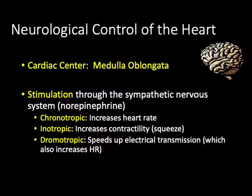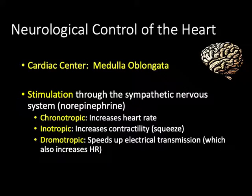The medulla oblongata houses the cardiac control center, which takes feedback from various receptors and sensors and stimulates the heart to increase output. It does this through chronotropic effects, which relate to heart rate; inotropic effects, which relate to contractile squeeze; and dromotropic effects, which refer to the speed of electrical transmission from one cell to the next. Speeding up transmission speeds up heart rate, so these effects overlap significantly.